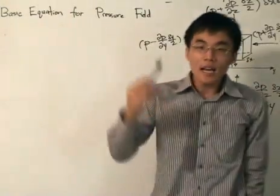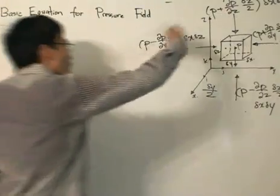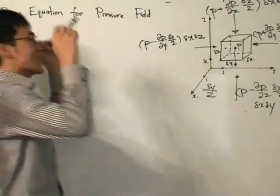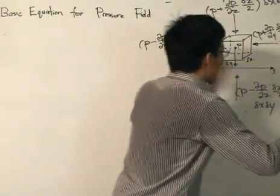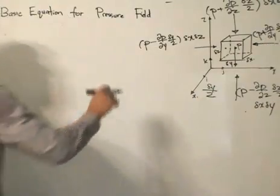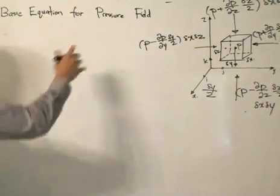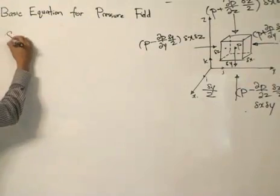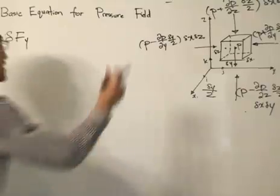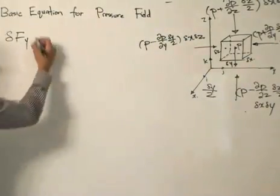The next step is to simplify the algebra by finding a certain quantity of the force acting in the y direction. As you can see, there are two forces, so we just basically want to resolve them. Taking the y direction as positive, we want to find a small force in the y direction. It's just simply this one take away this one over here, because we're taking that direction as positive.